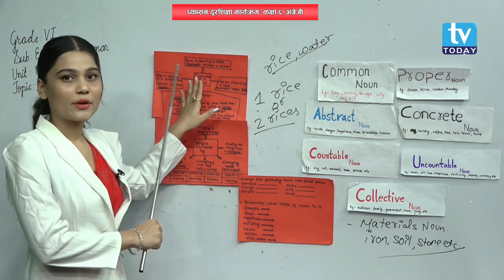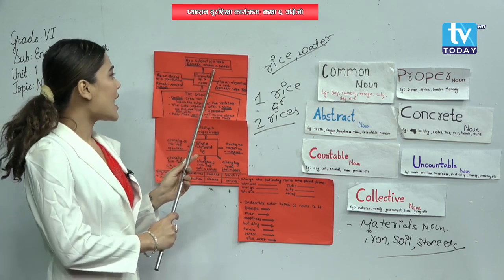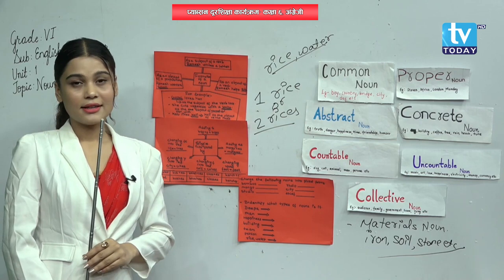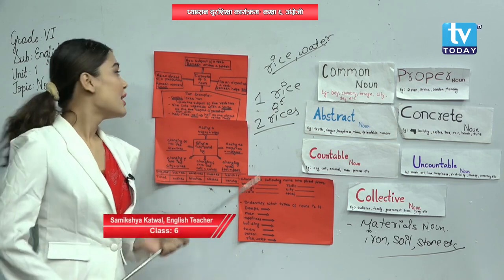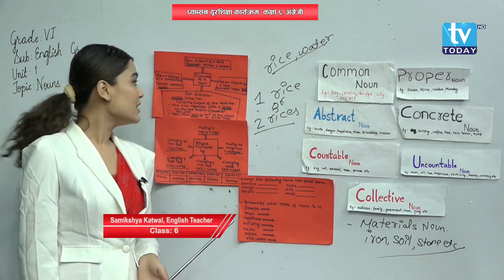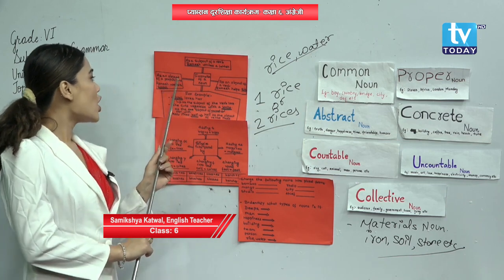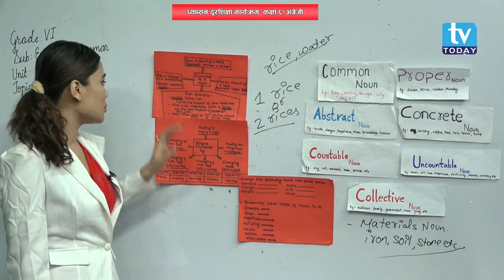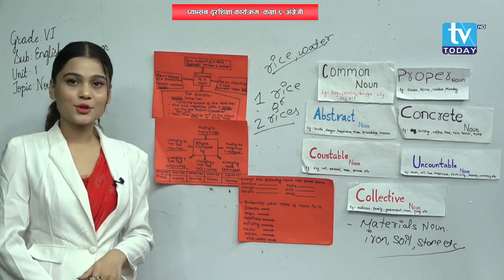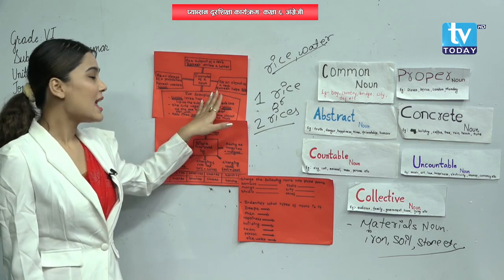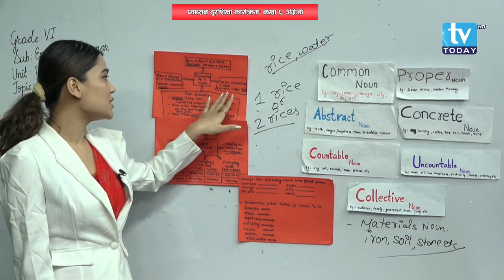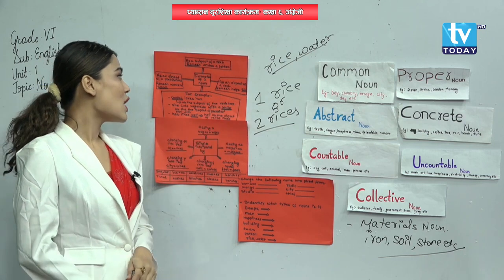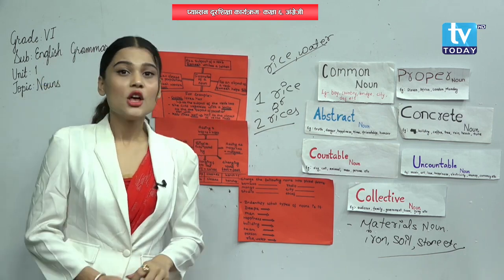For example, 'Romes writes a letter' — Romes is a subject here. 'Romes went to school' — school is the object of the preposition here. 'Romes helps Sita' — that means Sita is an object of a verb. So you can look here.